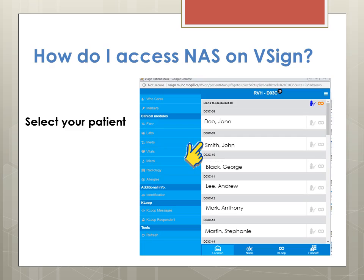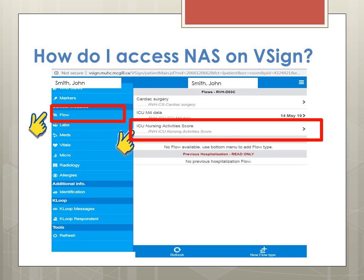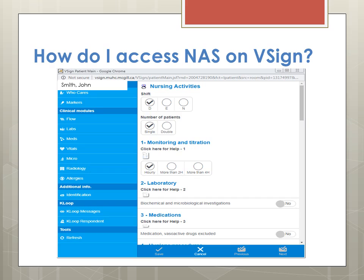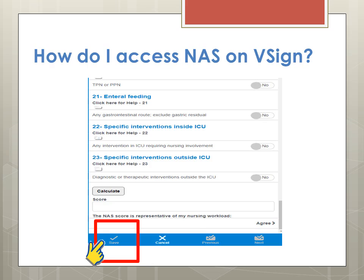Your ICU patient list will then show up, where you can select and click on your patient's name. First, make sure that you are in the Flow section, where you can see something called the ICU Nursing Activity Score. You click that, and this page will show up where you have to click on Nursing Activity. And voilà — this is the page where you will answer your 23 questions.